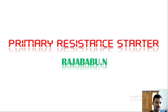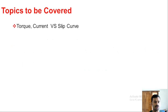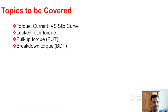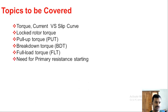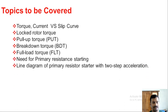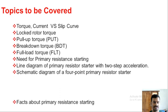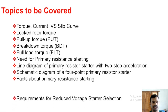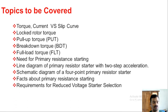Today we are going to discuss about primary resistance starters. The topics covered include torque versus slip and current versus slip curves, locked rotor torque, pull up torque, breakdown torque, full load torque, the need for primary resistance starting, line diagrams for primary resistance starters with two-step and four-step acceleration, facts about primary resistance starting, and requirements for reduced voltage starter selection.